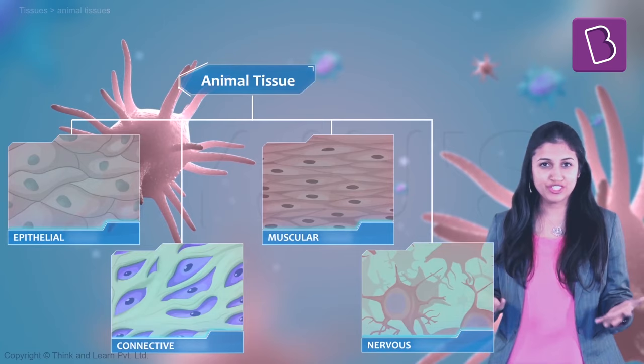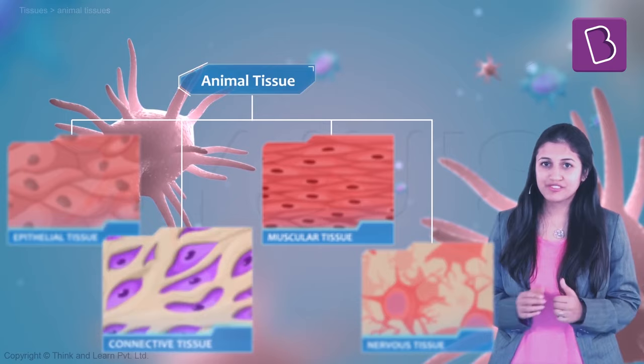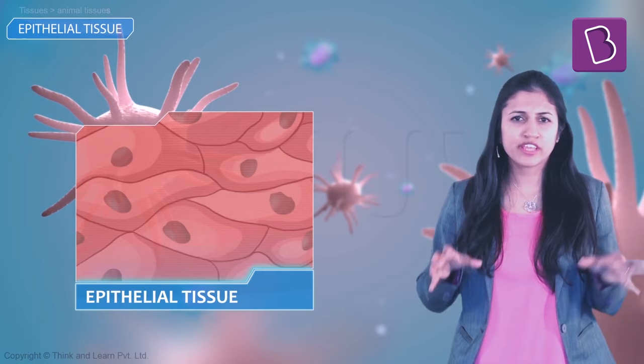Although we animals are such a bunch of complicated creatures, we are basically made up of just four types of tissue: epithelial tissue, muscular tissue, connective tissue, and nervous tissue. First up is the epithelial tissue.